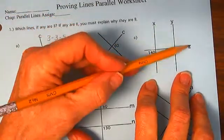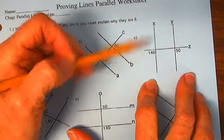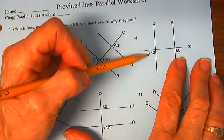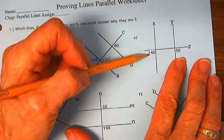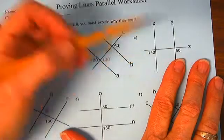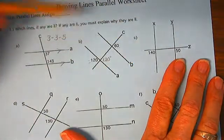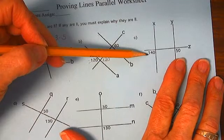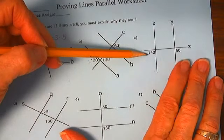Here we have two lines cut by a transversal. Again, these are same side exterior angles. They're not congruent and they're not supplementary.